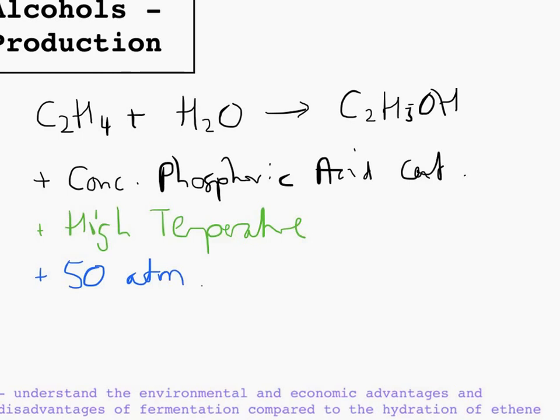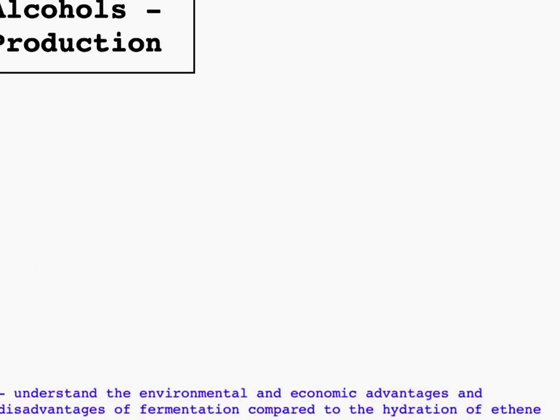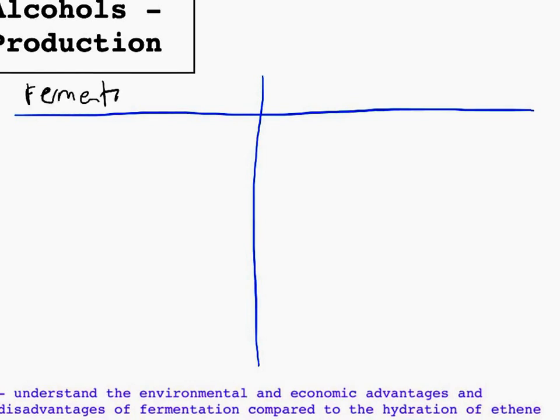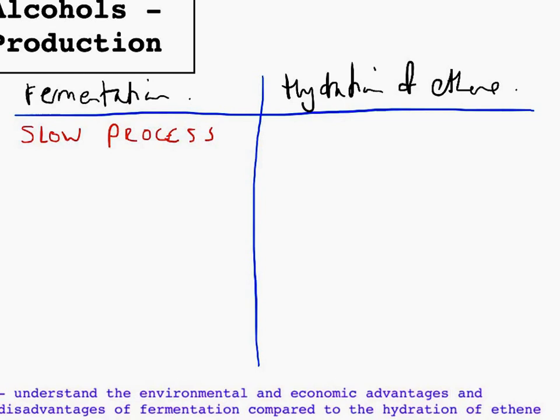We now think about the advantages and disadvantages of each method. I'm just going to delete what I've written here, and I'm going to compare each method. We've got fermentation as one process, and we've got hydration of ethene as another. First thing is about its rate of reaction. Fermentation is a slow process, whereas hydration of ethene is a rapid process, so it's very fast.